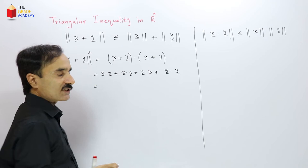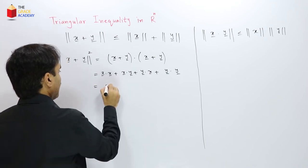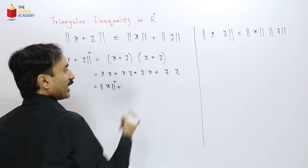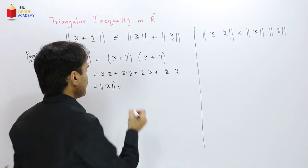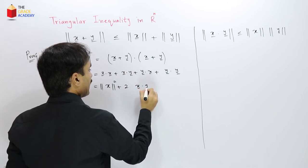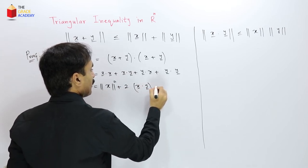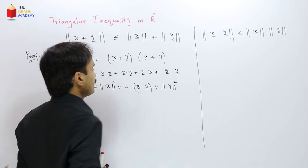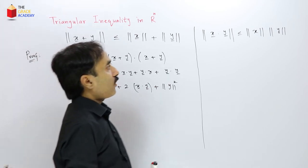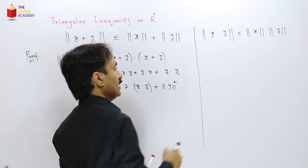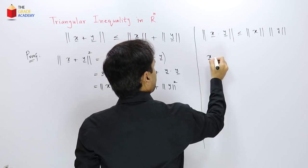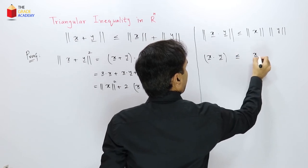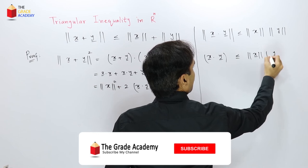This can be further written as: x·x is ‖x‖², and x·y and y·x are the same thing, so together they give 2 times x·y, and y·y is ‖y‖². So we have ‖x+y‖² = ‖x‖² + 2(x·y) + ‖y‖². From the Cauchy-Schwarz inequality, x·y is less than or equal to ‖x‖ times ‖y‖.